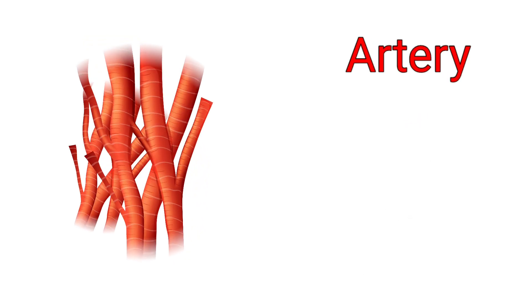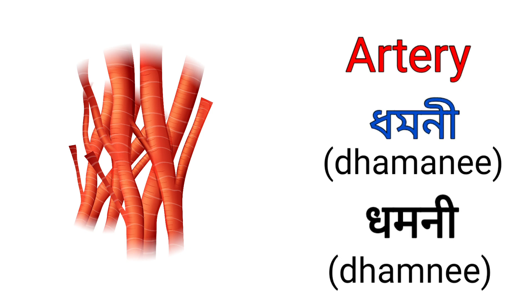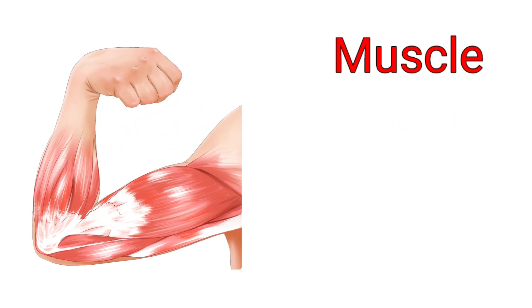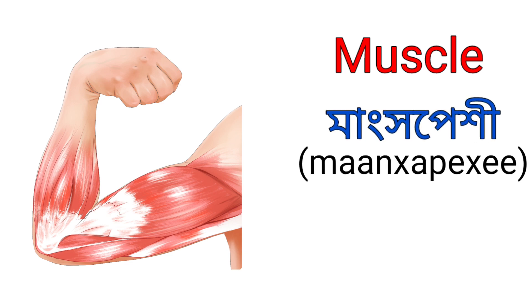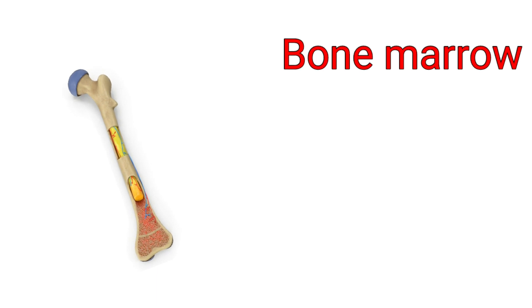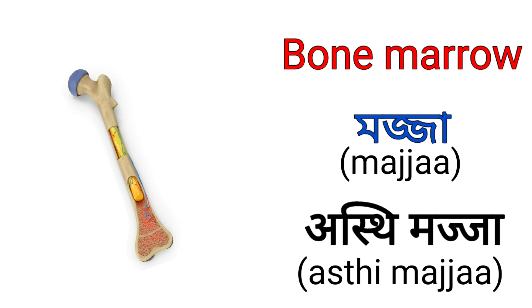Artery. It's called Dhamoni in Assamese and it's called Dhamni in Hindi. Muscle. It's called Mangkhopehi in Assamese and it's called Mangspeshi in Hindi. Bone marrow. It's called Mojja in Assamese — that means Haror Mojja — and it's called Ashtimajja in Hindi.